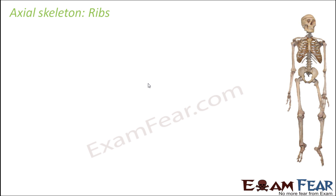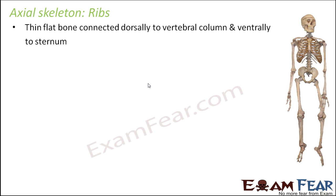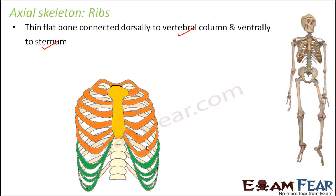The last portion of the axial skeleton is the ribs. These are thin flat bones connected dorsally to the vertebral column and ventrally to the sternum. The orange and green colored structures in the diagram are the ribs. There are a total of 12 pairs of ribs.